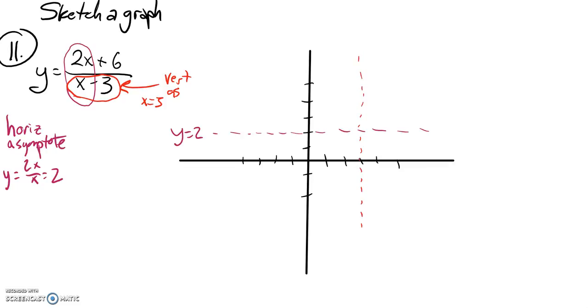I can't plug 3 into this equation, so I have a vertical asymptote here. I wrote 0, but I meant to write 3 when x is 3.